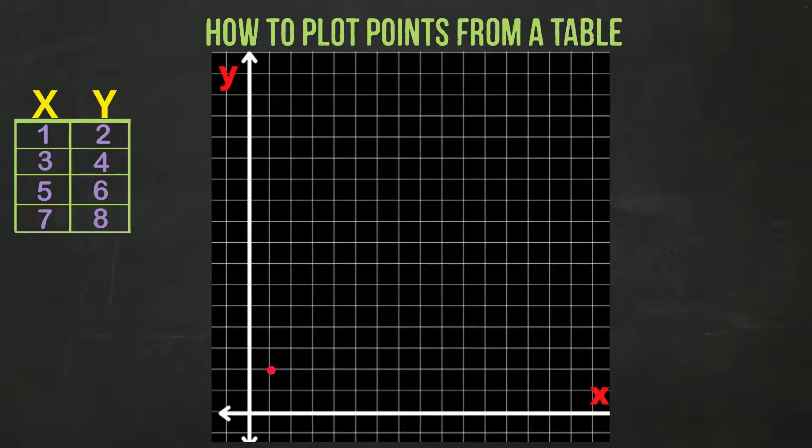The second entry in our table has x at 3 and y is 4. Moving the same way as the first example, we move to the right 3 and then up 4.